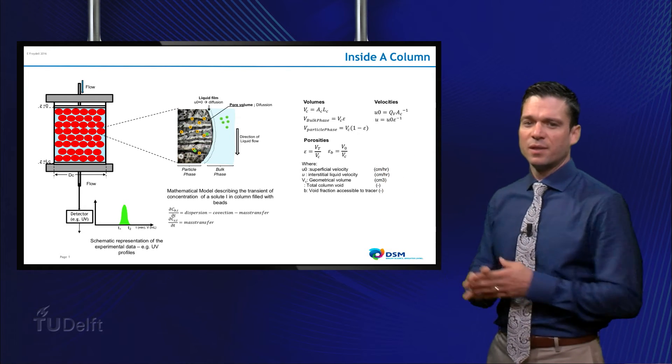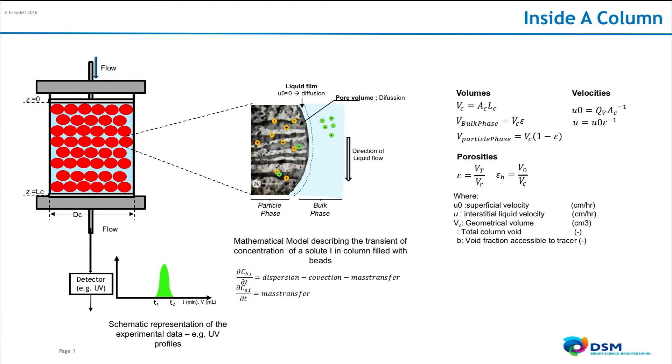Zooming in into a particle, four distinct phases are present: the bulk phase, presented in blue, the liquid film phase, the pore phase and the solid phase. The target molecule green spheres will go from the bulk all the way to the solid as it moves down the column.